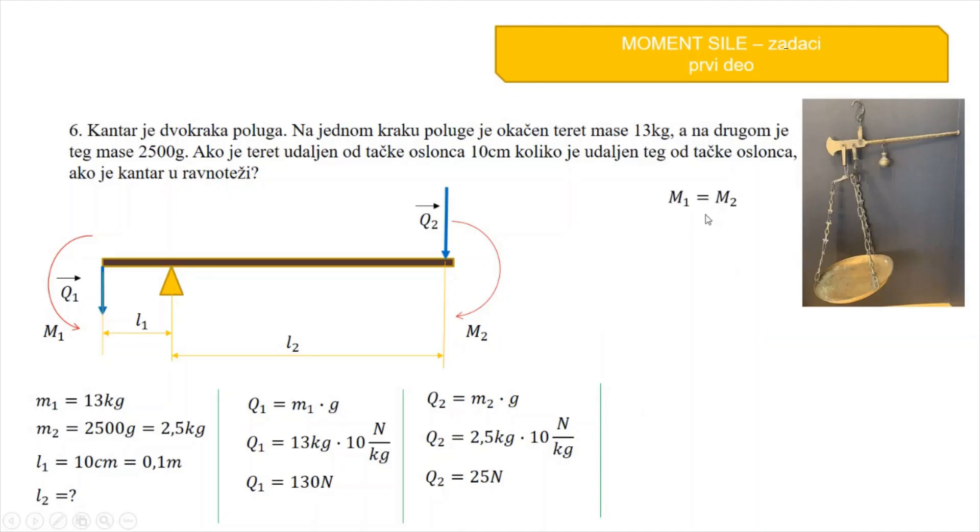Sada, možemo pisati uslov ravnoteže. M1 je jednako M2. Umjesto M1 pišem Q1 puta L1, a umjesto M2 Q2 puta L2. I sada vidite, zašto smo prvo morali da izračunamo Q1 i Q2, pa tek onda da pišemo ovaj uslov ravnoteže. Odavde, iz ovog obraza se traži koliko je L2. Q2 je sa ove strane množilo kada pređe na drugu stranu deliće. I dobili smo ovde obraza za L2.